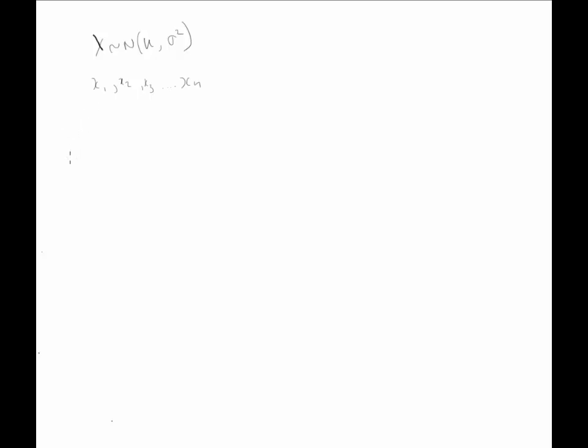The PDF for a normal distribution is as follows: 1 over sigma square root 2 pi times the exponential of minus 1 over 2 sigma squared times x minus mu squared. So if we apply this for n observations, we have f of xi given mu and variance.